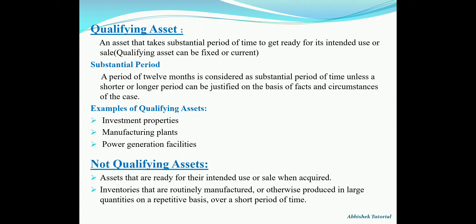The whole AS16 is dependent on the definition of qualifying asset, as the nature of borrowing will be determined by whether the asset falls within the purview of a qualifying asset or not. A qualifying asset is an asset that takes a substantial period of time to get ready for its intended use or sale. 'Intended use' may refer to a fixed asset, while 'sale' may refer to current assets. Ordinarily, 12 months is considered a substantial period, however a shorter or longer period can be justified based on facts and circumstances.